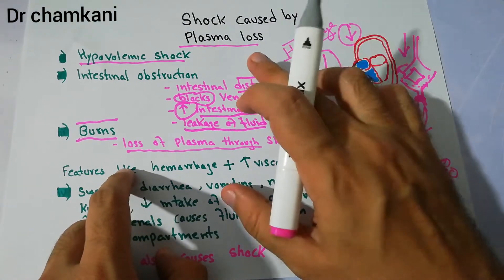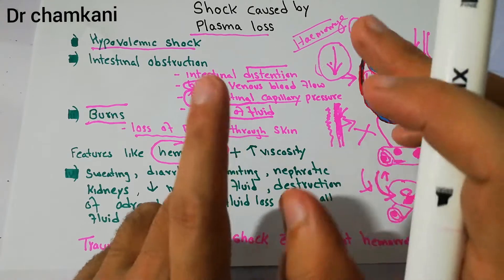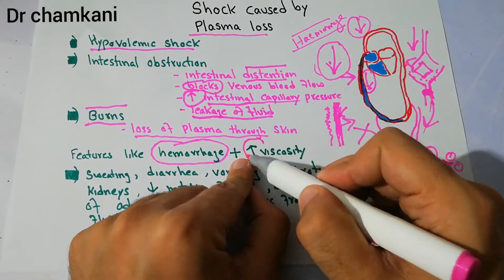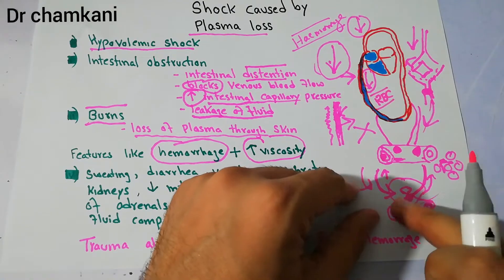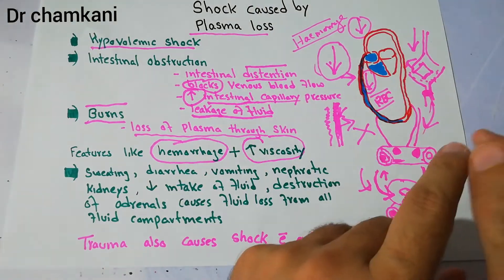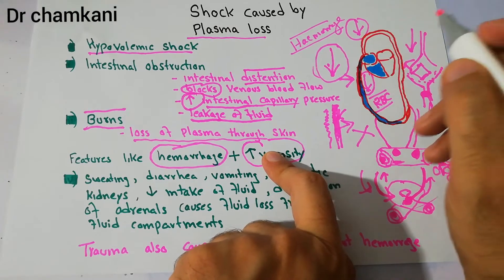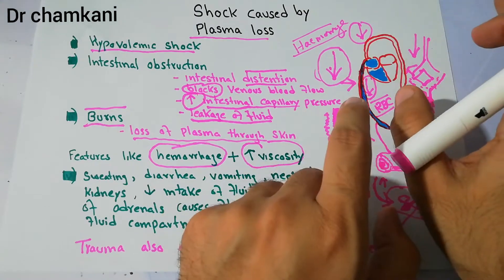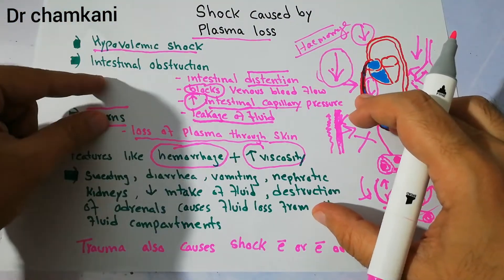The features of hypovolemic shock due to plasma loss are similar to those of shock due to hemorrhage, with one additional feature: increased viscosity of blood. The red blood cells remain inside the vessels and are not lost, but fluid is lost. When fluid is lost, blood viscosity increases, making blood movement toward the heart more sluggish. Venous return decreases, ultimately leading to decreased cardiac output and decreased nutrient supply, increasing the severity of the shock.